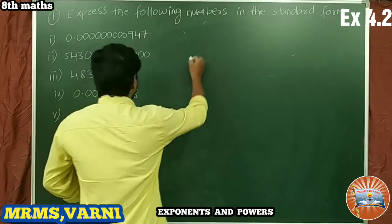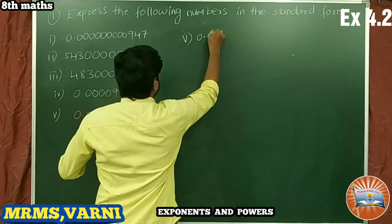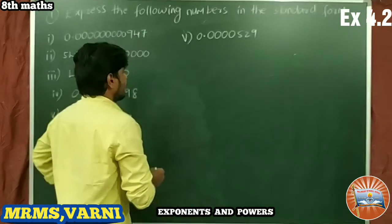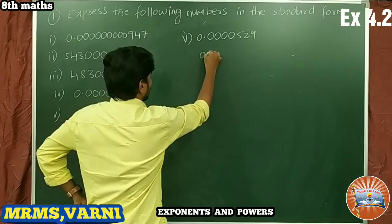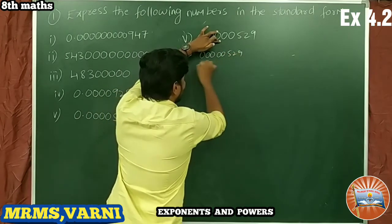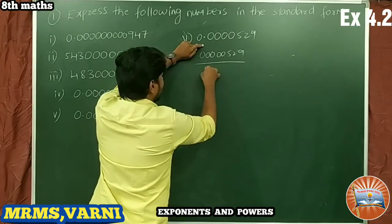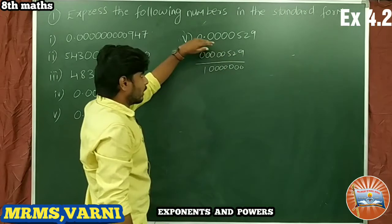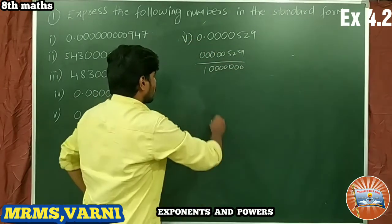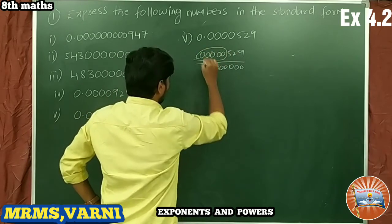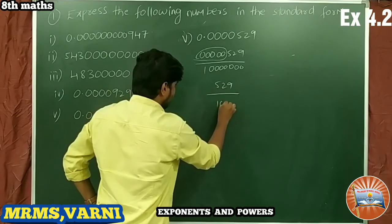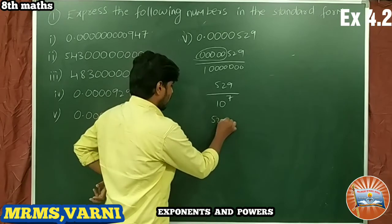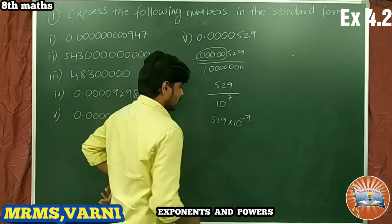Problem number 5: the given number is 0.0000052 9. After the decimal point there are 7 places: 1, 2, 3, 4, 5, 6, 7. Removing the decimal and dropping leading zeros gives 529, so we write 529 / 10^7, which equals 529 × 10^(−7).